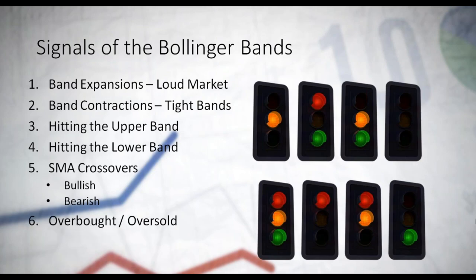Another signal that the Bollinger Bands indicator can give you is when the price action is overbought or oversold. Since we only have a couple of bands and a moving average, how are we identifying overbought and oversold signals? This happens when you see the bands expand very, very much — when the bands sharply create an expansion and the two bands start expanding very quickly.